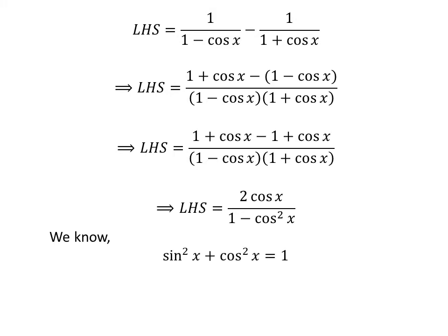As we know, square of sine of x plus square of cosine of x is equal to 1. From this identity, we can deduce that 1 minus square of cosine of x is equal to square of sine of x.